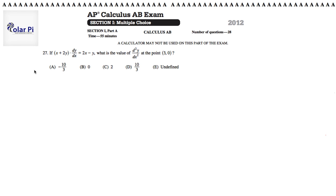Hi, welcome. In this video, I'm going to go through problem 27. Problem 27 says, if x plus 2y times dy/dx is equal to 2x minus y, what is the value of d²y/dx², which is the second derivative, at the point (3, 0)?